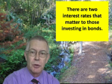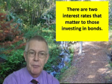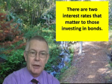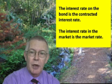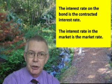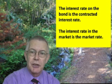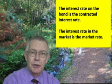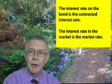Bond holders and prospective investors look at two interest rates when considering whether to purchase or to continue to hold bonds. The interest rate that is on the bond certificate is the contracted rate — that is the rate agreed when the bonds are issued and purchased. The second rate is the market rate, which essentially means what other bonds are offering at this time. Any difference between the contracted rate and the market rate will have an influence on the way in which the bonds are sold.